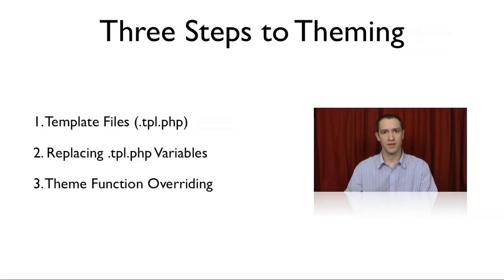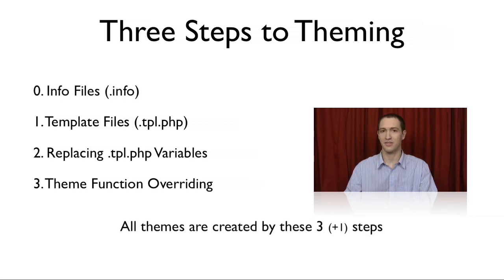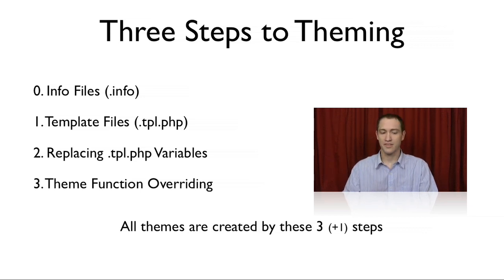The three steps to theming that we've already covered in the previous video involve the first step, which is template files — tpl.php files such as node.tpl.php and page.tpl.php — replacing tpl.php variables, and theme function overwriting, plus our zero step of info files, which are so simple they don't even count. We've covered steps zero and one in the previous video.